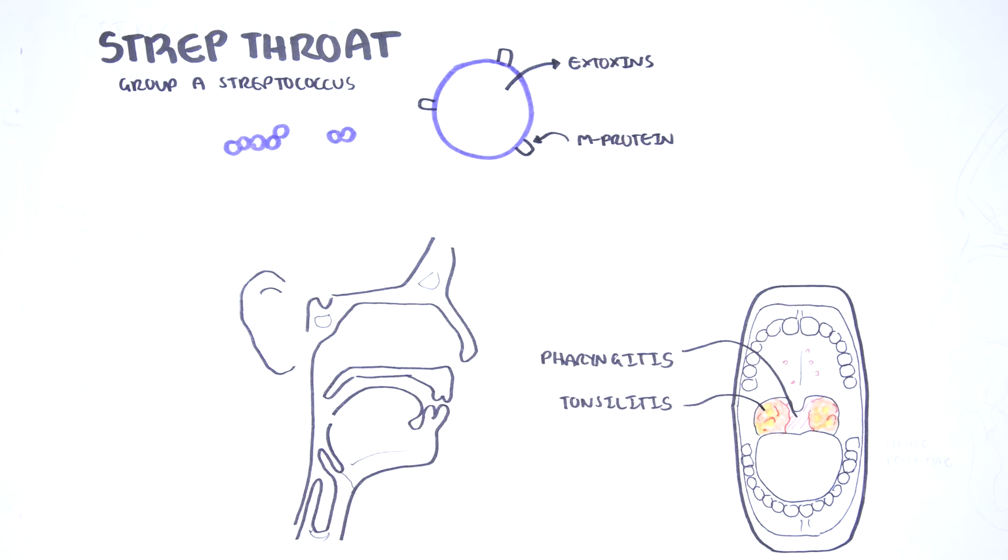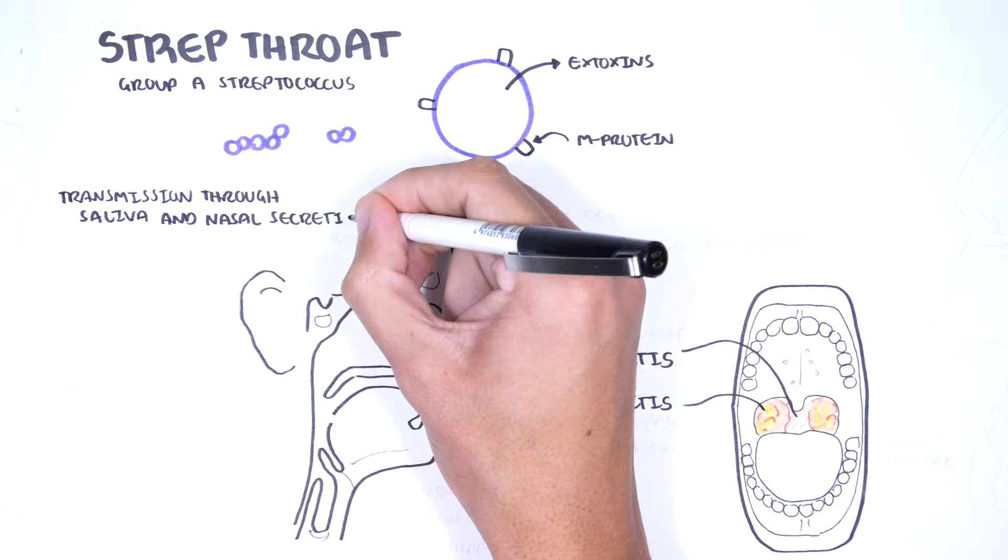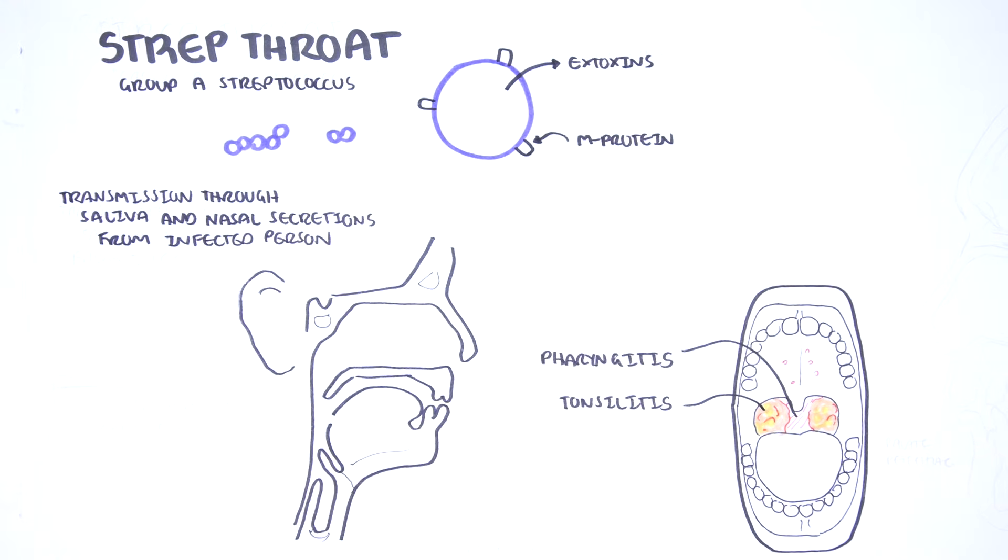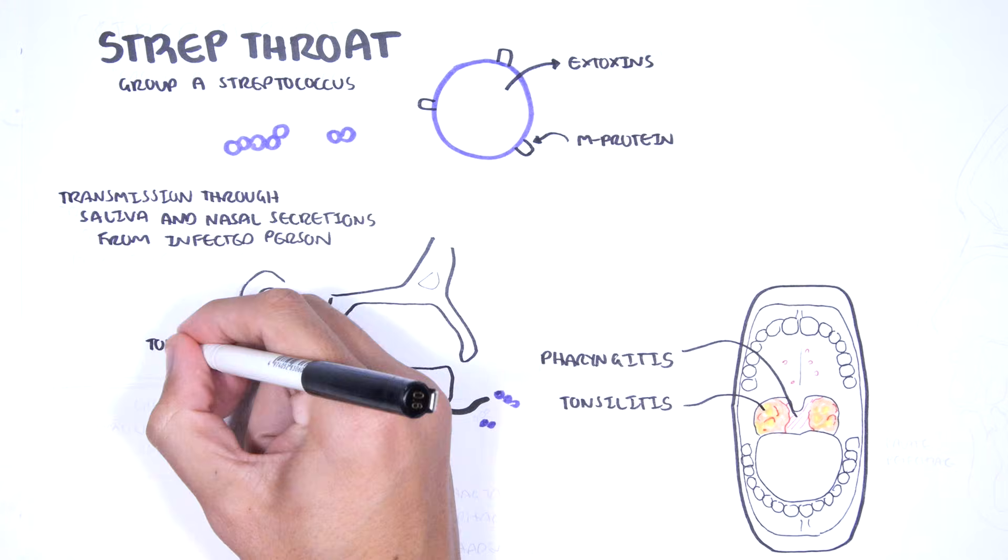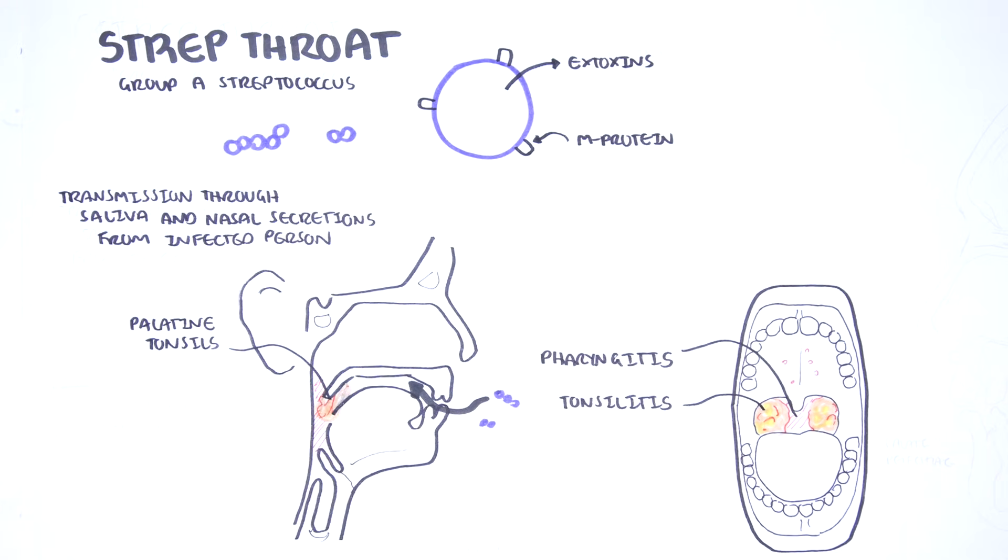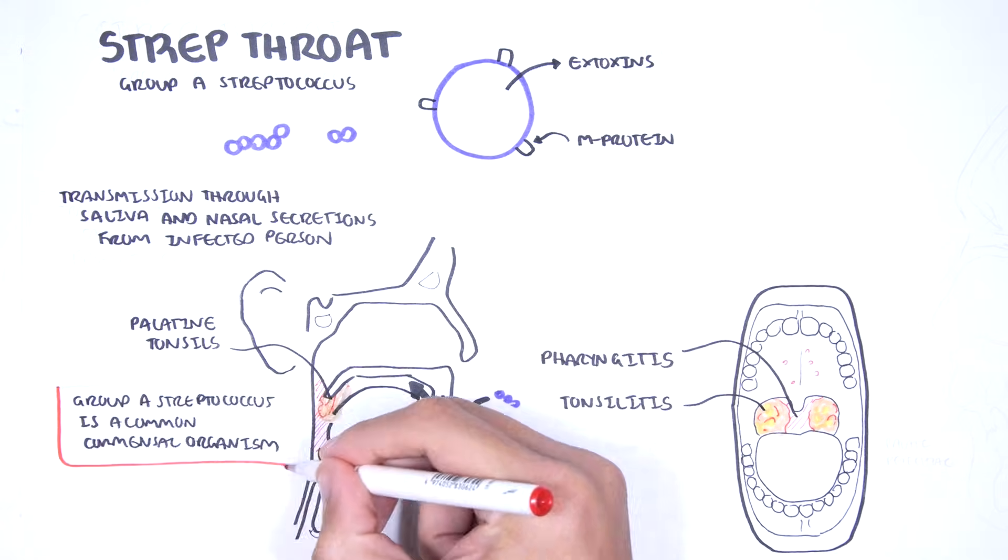Transmission of strep throat is through saliva and nasal secretion from an infected person. Here, Group A Streptococcus targets palatine tonsils. However, it's also important to remember that Group A Streptococcus is a common commensal organism as well.